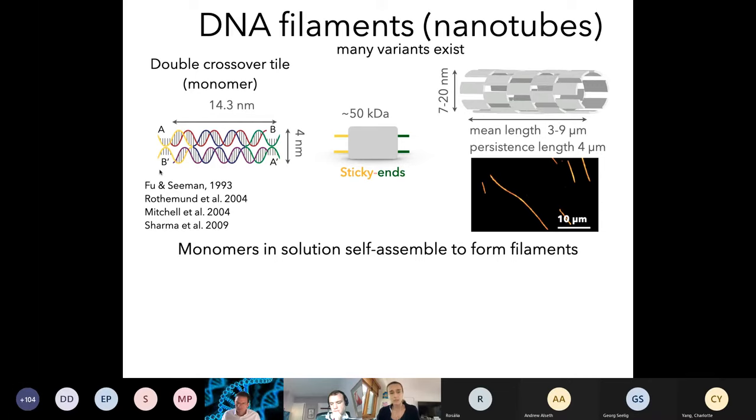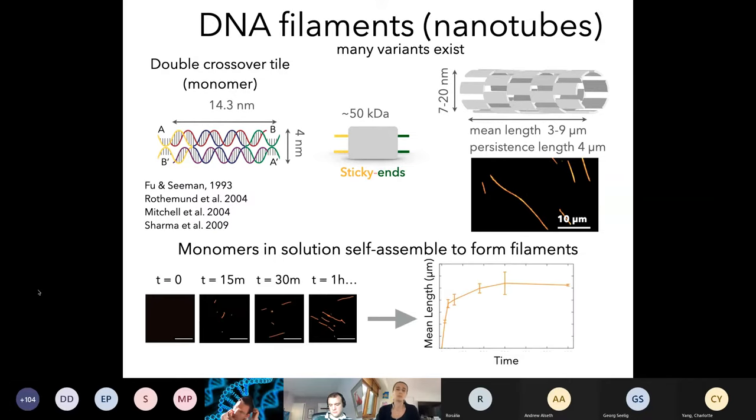If you design the sticky ends correctly in terms of length, then you can get the assembly of lattices that fold into tubes. Here you can see example fluorescence microscopy images of those tubes. These were labeled with a fluorescent molecule. The key thing is that if you are able to assemble monomers, they will self-assemble among them to form filaments. What I'm going to show you later are a lot of plots where we're basically taking images over time of these filaments as they grow, and then we will plot their mean length versus time.